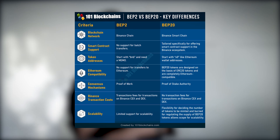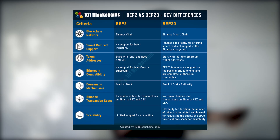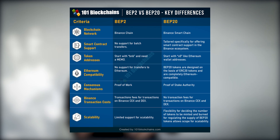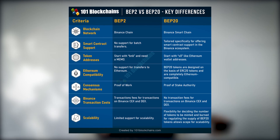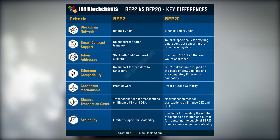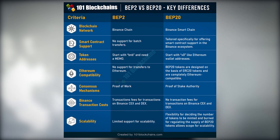Remember guys that BNB tokens can be BEP2 as well as BEP20. BEP2 tokens are native to the Binance Chain while the BEP20 tokens are native to the Binance Smart Chain. BEP20 token extends ERC20, the most common Ethereum token standard.